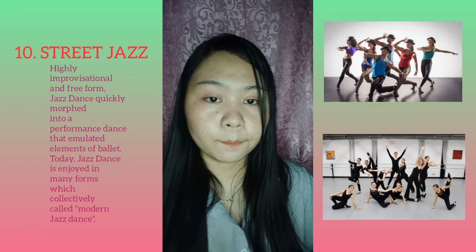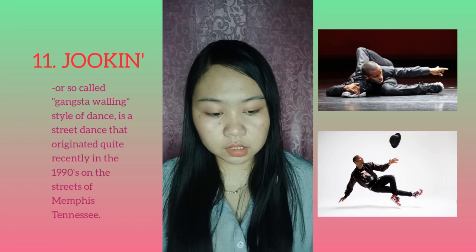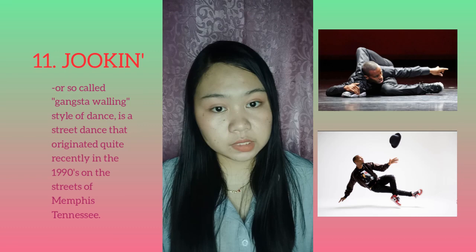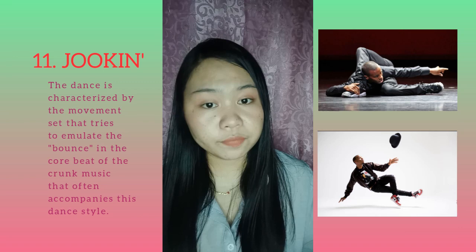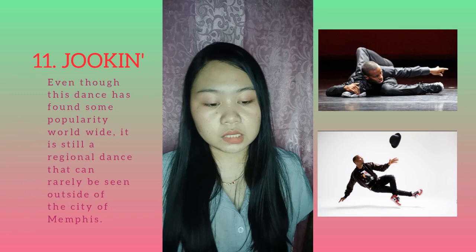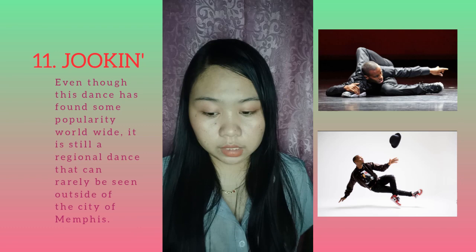Another type of modern dance is Jookin, also called the Gangsta Walking style of dance. It is a street dance that originated quite recently in the 1990s on the streets of Memphis, Tennessee. The dance is characterized by a movement set that tries to emulate the bounce in the core beat of the crank music that often accompanies this dance style. Even though this dance has found some popularity worldwide, it is still an original dance that can rarely be seen outside of the city of Memphis.